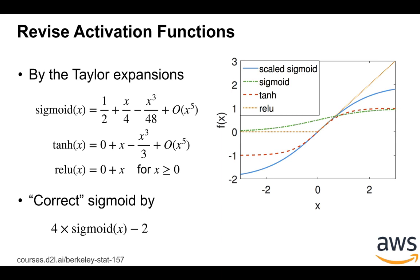For relu, if x is larger than zero, then it is actually an identity function. So then we see that close to x equals to zero, both tanh and relu are close to the identity functions we have.